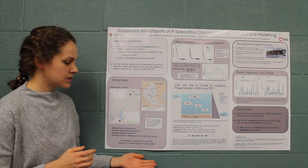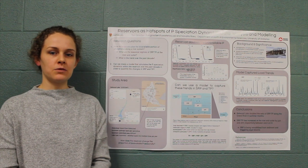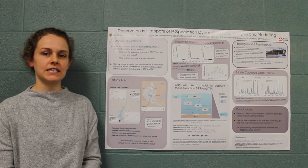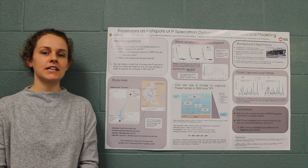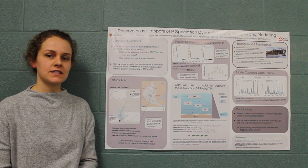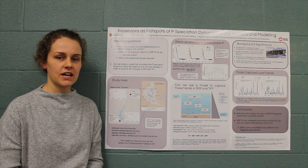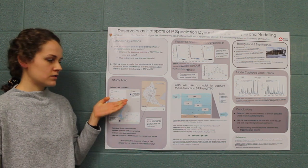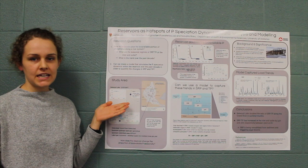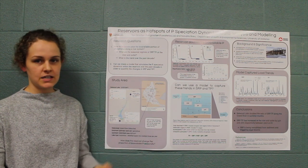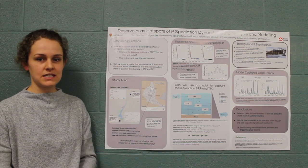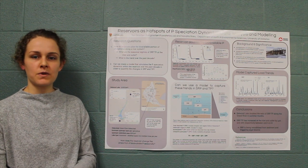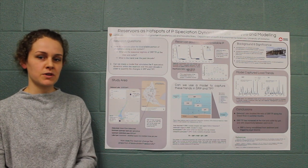The area that I studied was Bellwood Lake. It is located in the Grand River watershed and is deep enough that it can stratify in the summer months. Bellwood Lake has seen an increase in SRP to TP ratio in the last 10 years by approximately 30 percent.